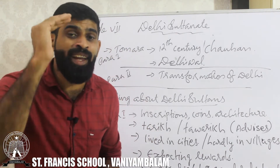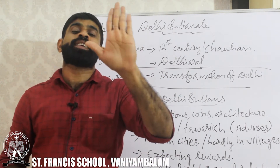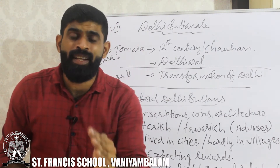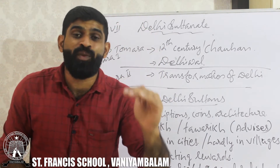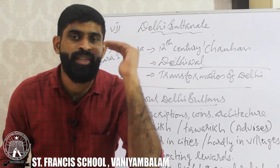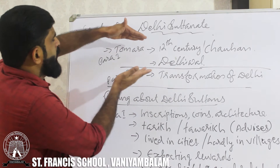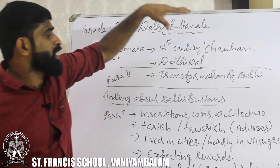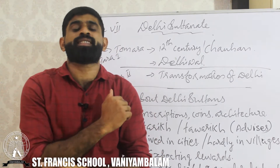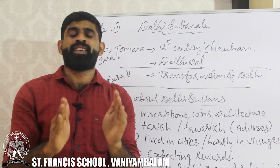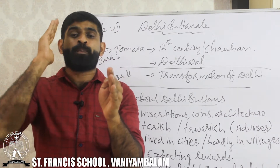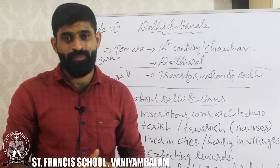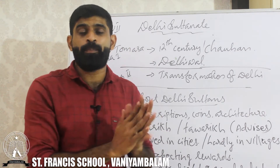Under the Delhi Sultanate, five kingdoms are there. The first kingdom that came over Delhi and transformed it into a better level was the Slave Dynasty. Before the Slave Dynasty, Delhi was under the Tomara Rajputs, then in the 12th century it was captured by Chauhan. A complete change took place to make Delhi a proper valuable administrative city.